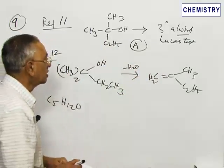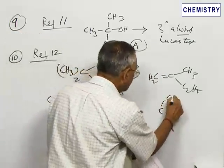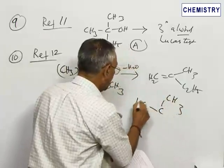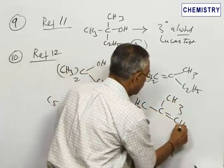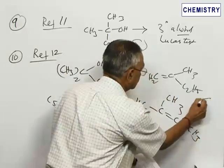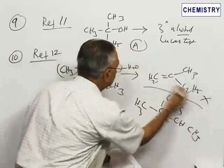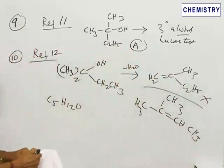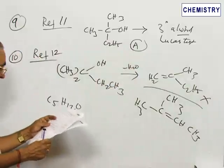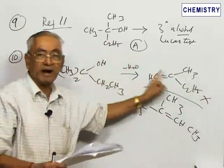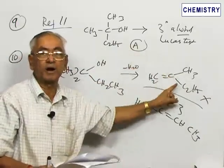If a more substituted olefin is formed, the product formed should be this CH3 double bond CH CH3 and not this. Therefore this statement or the presentation of the question namely 12, the product, that is the error in the product. The product that is given is not a Saytzeff's product.